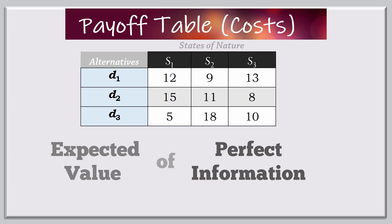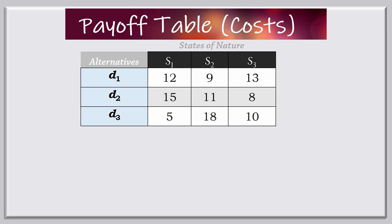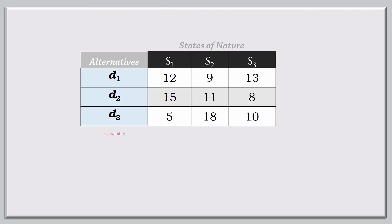To calculate expected values we need the probabilities of the states of nature. Suppose the probability for S1 is 0.3, 0.5 for S2, and since the probabilities must add up to 1, we know that the probability for S3 is 0.2.